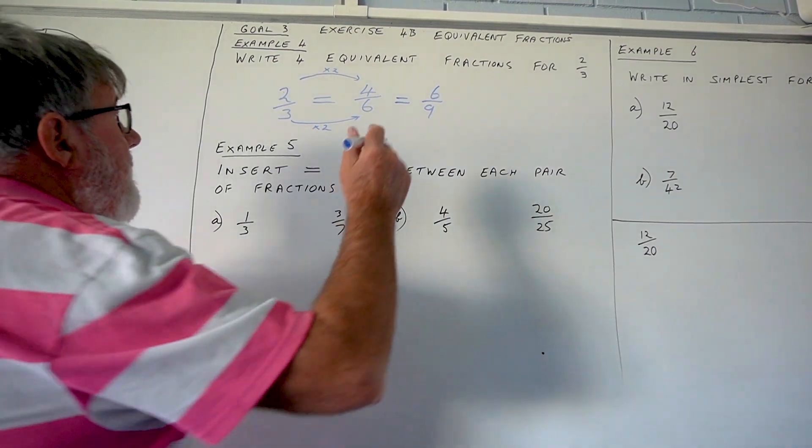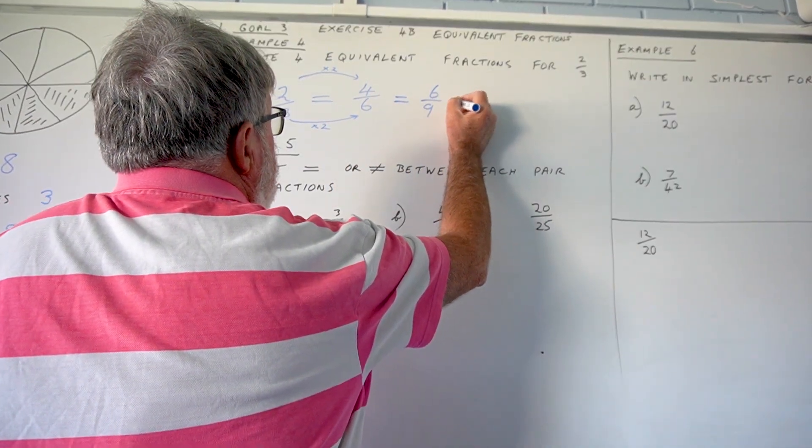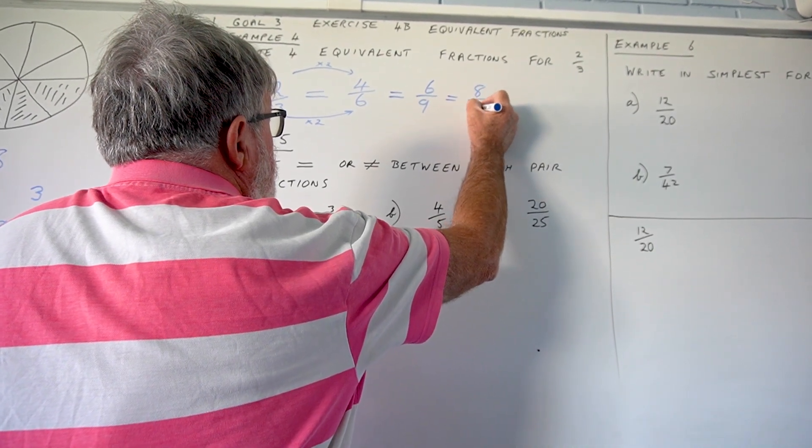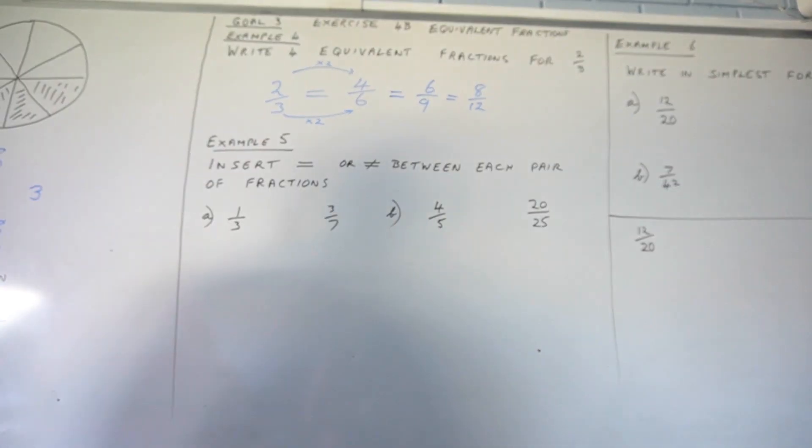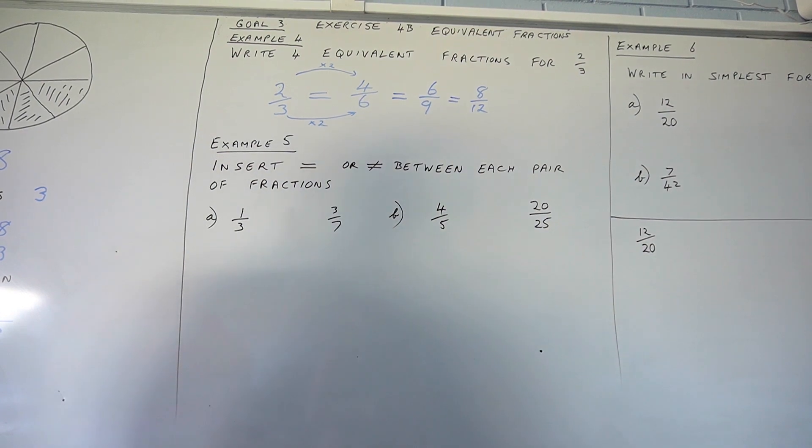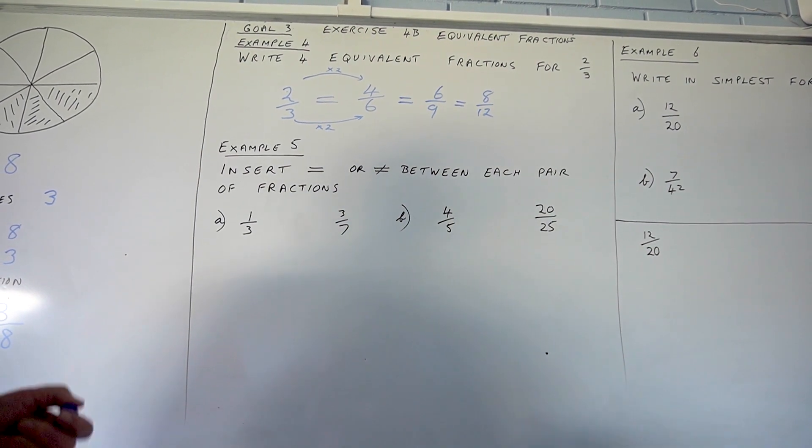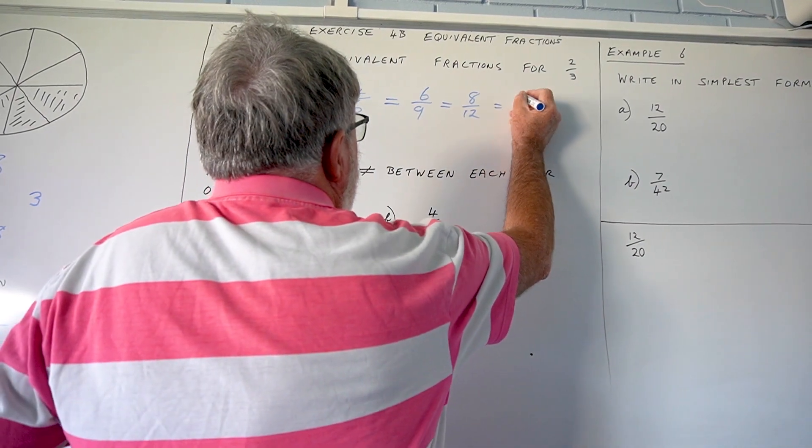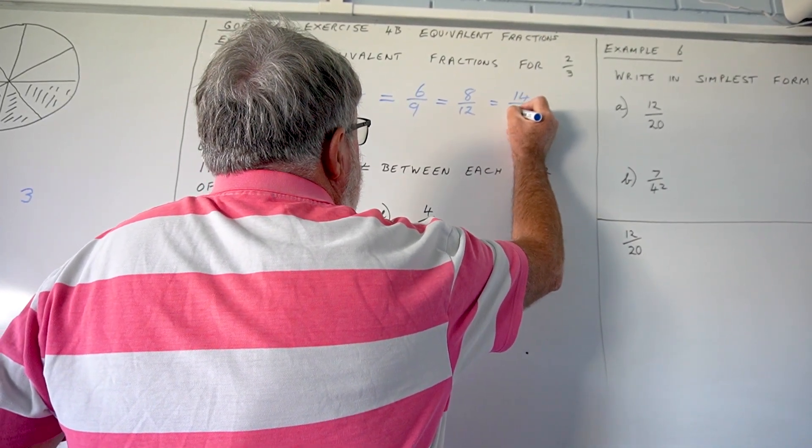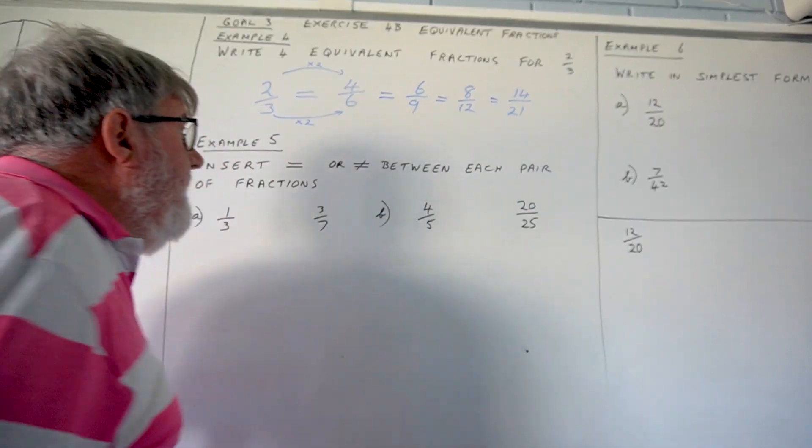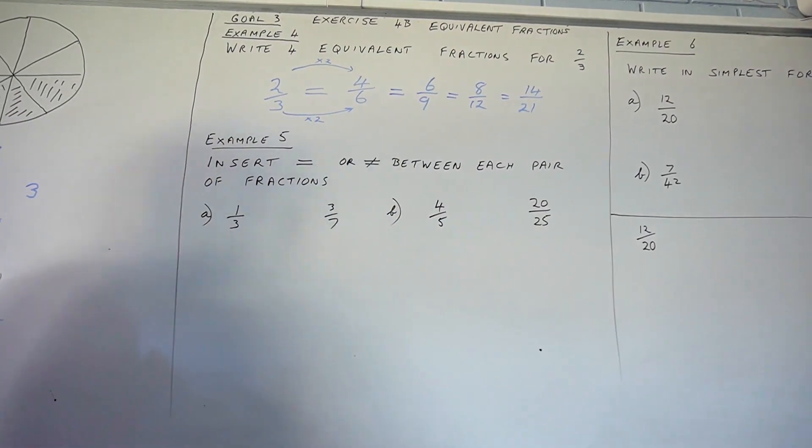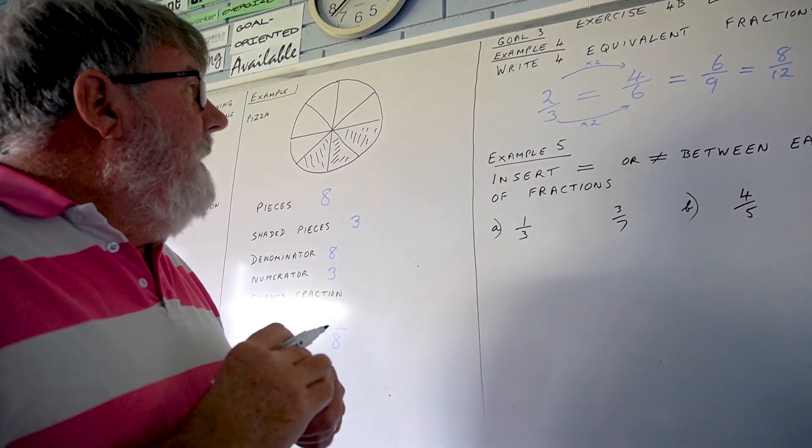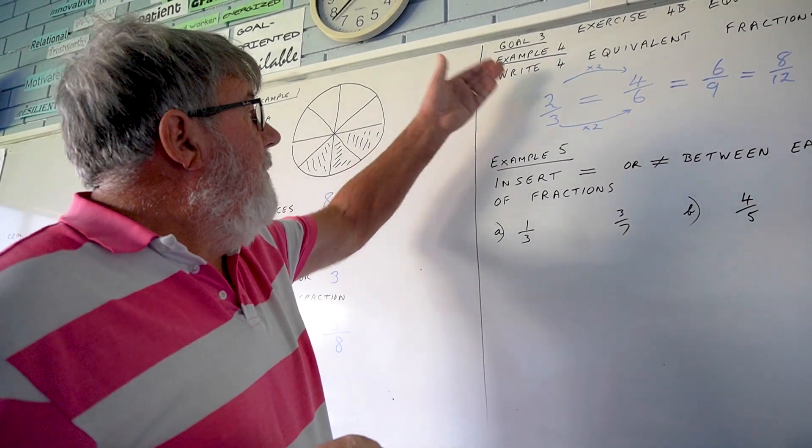What about if I multiply by 4? 2 times 4 is 8. 3 times 4 is 12. So, 8 twelfths is the same as 2 thirds. What if I multiply by 7? 7 times 2 is 14. 7 times 3 is 21. Maybe you're getting a little bit of an idea that you do need to be able to just know your tables. So, that's worked example 4.